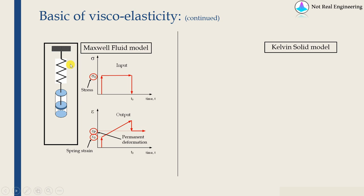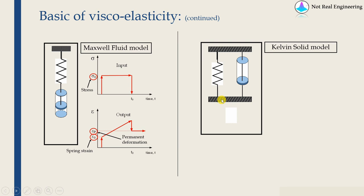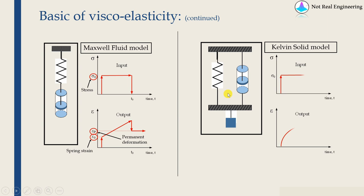And another simple model can be a spring and dashpot in parallel, which is known as Kelvin solid model. Now if we apply a load over here, then can you tell me what will happen? Yes, because of spring, there should be some instantaneous deformation, but dashpot will resist that. And because of dashpot, there should be a permanent deformation, spring will resist that.